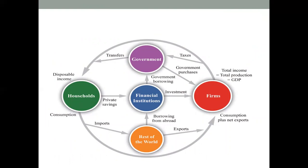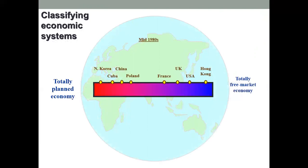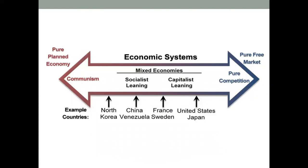The blend includes firms, businesses, households, and the government all interacting to accelerate GDP production. Neither the totally planned economy on the left nor the totally free market economy is accepted. In the mid-1980s, command systems such as China, Cuba, and North Korea were centralized on the left, while the right-hand side had a highly free economic system. By the early 2020s, some maintained their position while others moved toward mixed systems — ranging from socialist-leaning to capitalist-leaning economies.